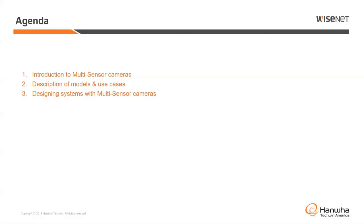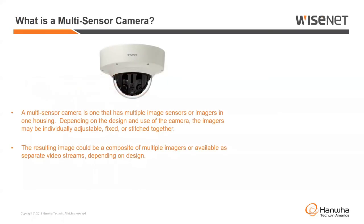Our agenda is we're going to talk about these multi-sensor multi-directional cameras. I'm going to talk about some of the models that Hanwha has, and we'll talk about some of the use cases where they fit in, what the point of them is, how to use them properly. And then at the end of the session we're going to go into how to design a system with a multi-sensor — showing the use case, the cost savings, and the benefits of using these types of cameras. So to start off: what is a multi-sensor camera?